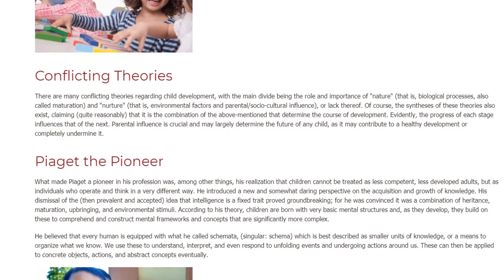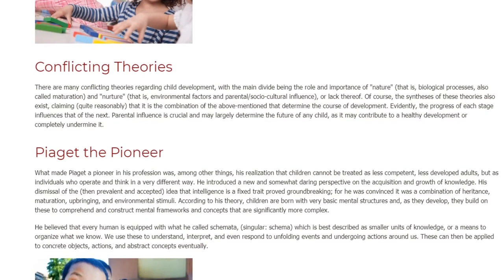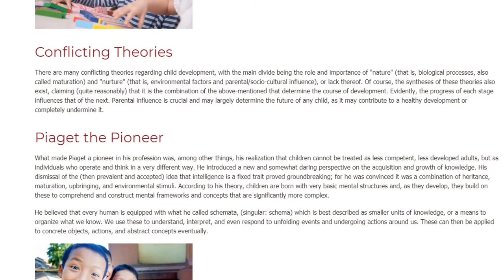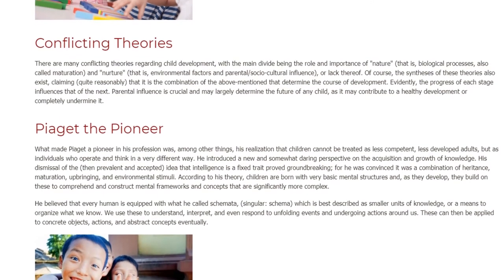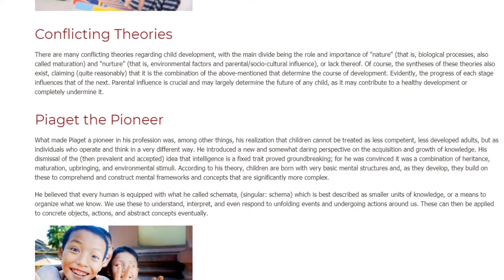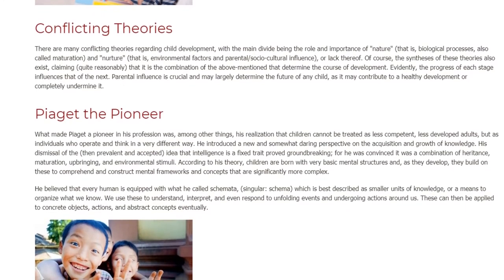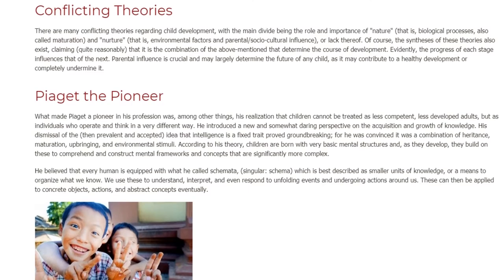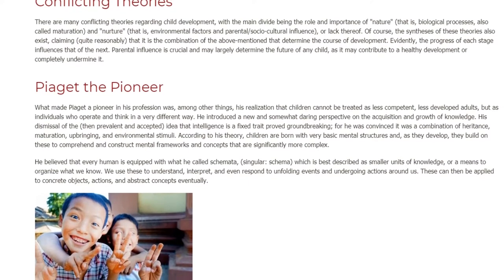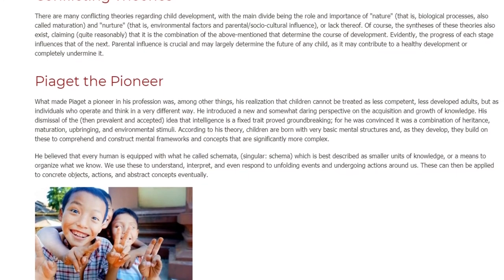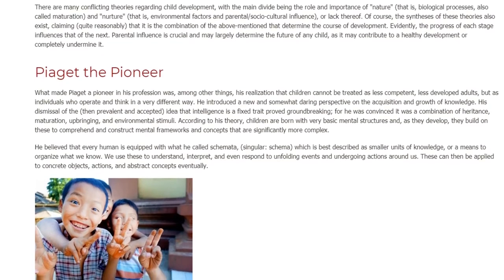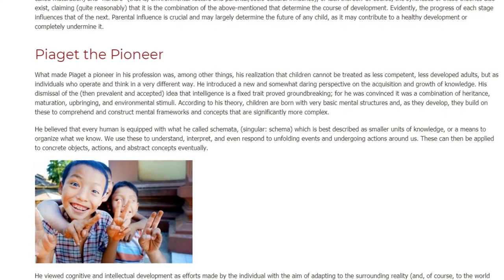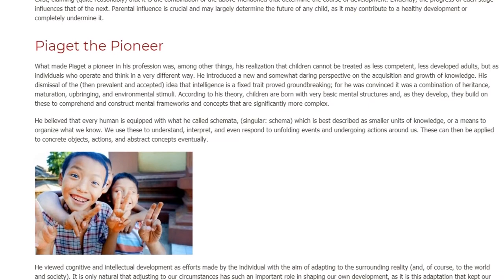According to his theory, children are born with very basic mental structures and, as they develop, they build on these to comprehend and construct mental frameworks and concepts that are significantly more complex. He believed that every human is equipped with what he called schemata (singular: schema), which is best described as smaller units of knowledge, or a means to organize what we know. We use these to understand, interpret, and even respond to unfolding events and ongoing actions around us. These can then be applied to concrete objects, actions, and abstract concepts eventually.